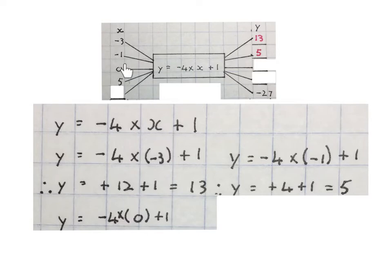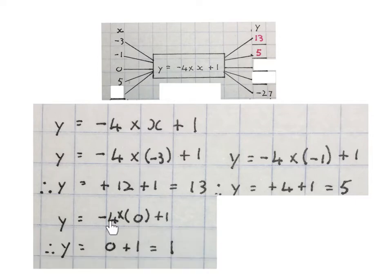Do the same with the zero. Substitute it in here. It'll look like this. Minus four times zero plus one. Minus four times zero is zero, plus one is one. So the X value of zero using this rule will give me a Y value of one.